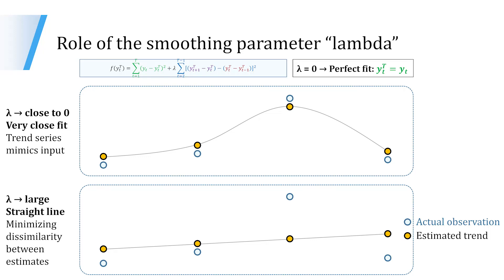On the other hand, when lambda is large or very large, we would get a straight line. This is because we would be minimizing the dissimilarity between consecutive estimates. If you look at the second and third observations on the graphs: when lambda is very close to zero, there is quite a significant dissimilarity between the second and third observations — they are at different levels. Whereas when lambda is very large, the second and third observations are at levels that are very close to each other.